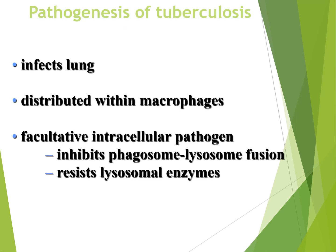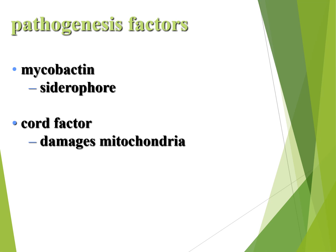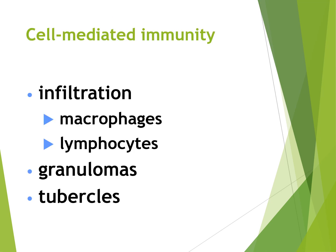Mycobacterium tuberculosis infects the lungs and is distributed within the macrophages. It is known as a facultative intracellular pathogen, meaning it inhibits phagosome-lysosome fusion and evades lysosomal enzymes. Other pathogenesis factors include mycobactin, which is a siderophore, and a cord factor which damages mitochondria. Infiltration of macrophages and lymphocytes occurs, along with the presence of granulomas and tubercles.